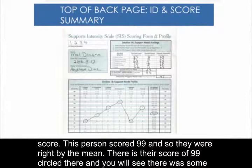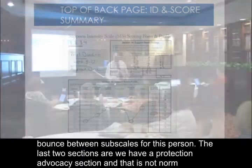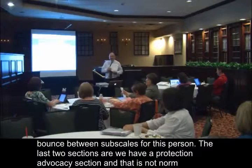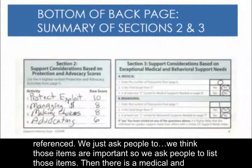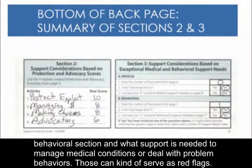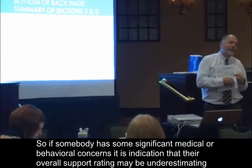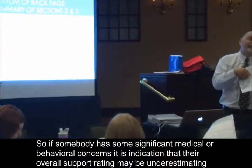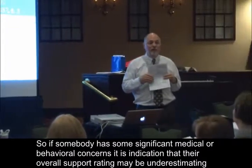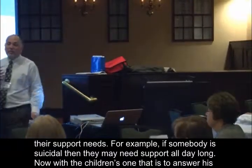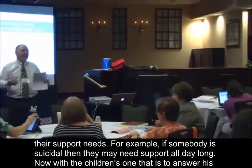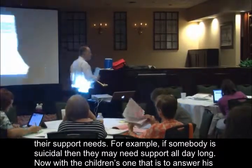There was some balance between subscales for this person. The last two sections are a protection and advocacy section — that's not norm referenced, we just ask people to list those items because we think they're important. And then there's a medical and behavioral section covering what support is needed to manage medical conditions or deal with problem behaviors. Those can kind of serve as red flags — if somebody has significant medical or behavioral concerns, it's an indication their overall support rating may be underestimating their support needs. For example, if somebody is suicidal, they may need support all day long.